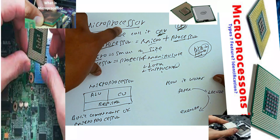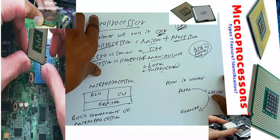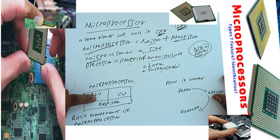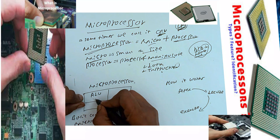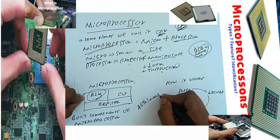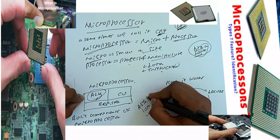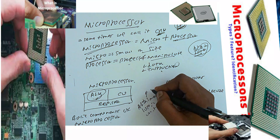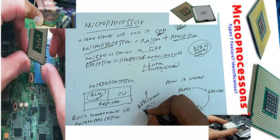Under the microprocessor, there are some basic components. The first one is ALU — Arithmetic and Logic Unit. The arithmetic unit handles addition, subtraction, multiplication, division, and modulus operation — such types of operations. We call it an arithmetic unit.